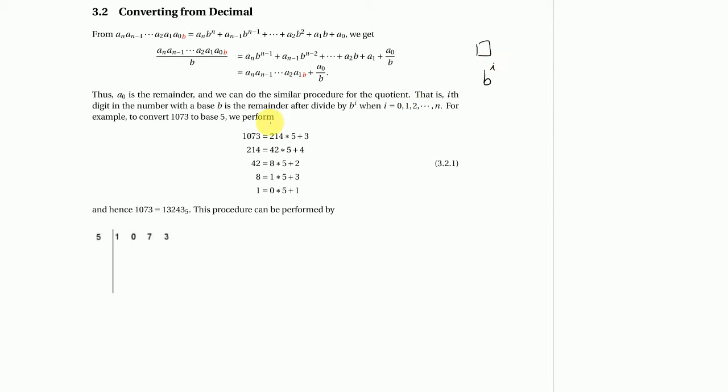For example, if the given number is 1073 in decimal, let's change that to base 5. The question is how many fives in this given number, which means we take division like 1073 divided by 5. Five and 23 is 4, 20 is 3, so the remainder is 3 and quotient is 214, which means we can convert 1073 to 214 times 5 plus 3.